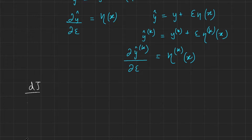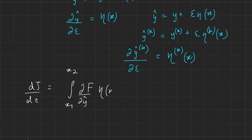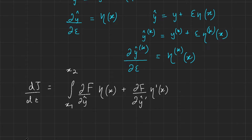We then have dJ/dε equals the integral from x₁ to x₂ of: (∂f/∂y_hat)·η(x) plus, for k = 1, (∂f/∂y_hat′)·η′(x), and this continues up until the nth case, which is (∂f/∂y_hat⁽ⁿ⁾)·η⁽ⁿ⁾(x), all integrated dx. For the first term we leave as is, and for the remaining terms we consider integrating by parts, term by term.